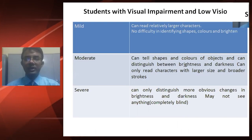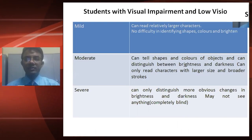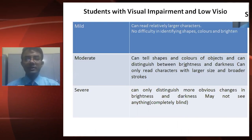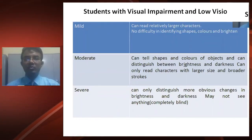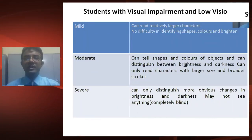Coming to the classification, students with visual impairment and low vision can be classified into three categories: mild, moderate, and severe.